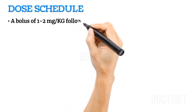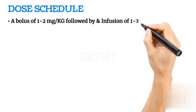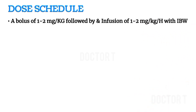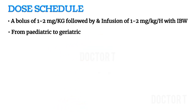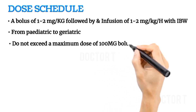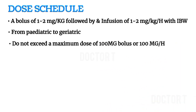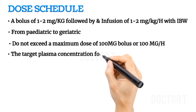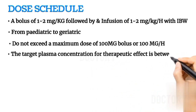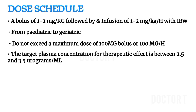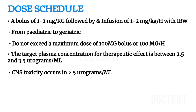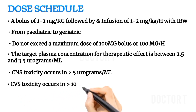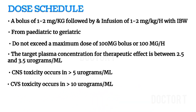Dose schedule: a bolus of 1–2 mg/kg followed by an infusion of 1–2 mg/kg/hour using ideal body weight, applicable from pediatric to geriatric patients. Do not exceed a maximum bolus dose of 100 mg or 100 mg/hour infusion. The target plasma concentration for therapeutic effect is between 2.5 and 3.5 mcg/mL. CNS toxicity occurs at more than 5 mcg/mL, and CVS toxicity occurs at more than 10 mcg/mL.